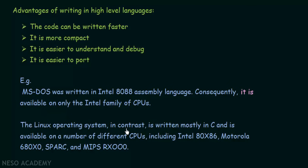In contrast, Linux is written mostly in C and is available on a number of different CPUs, including Intel, Motorola, SPARC, MIPS, and so on. Because it is written in a higher-level language, Linux is available on a variety of CPUs — that is the advantage of portability when writing in higher-level languages.